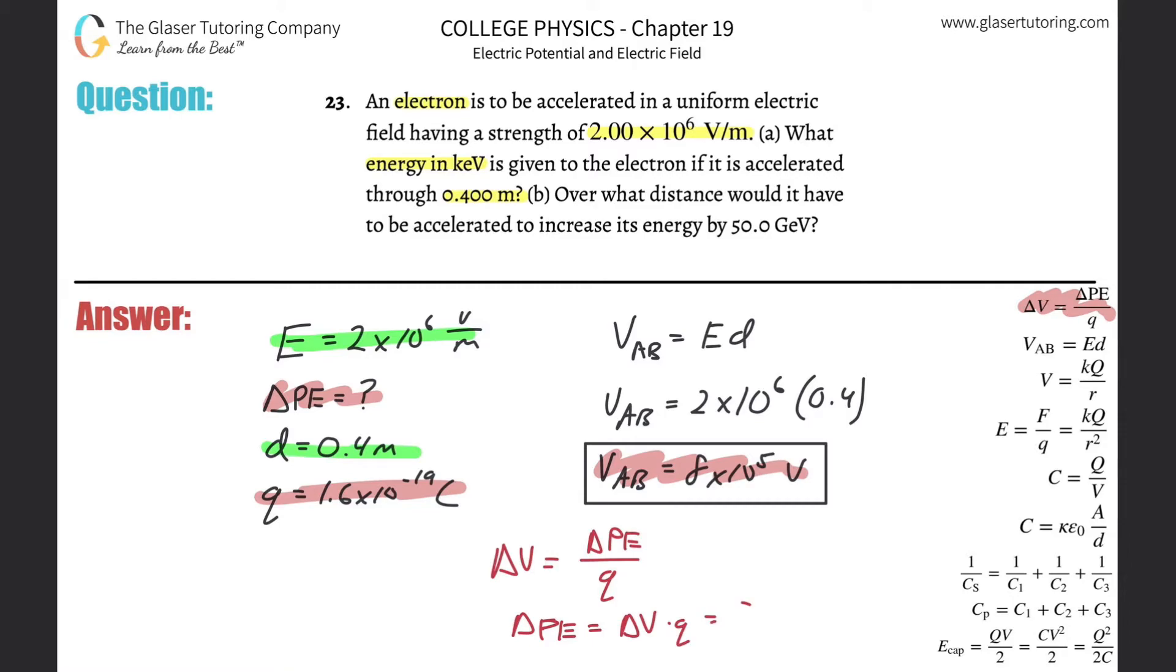So change in voltage multiplied by Q. What's the voltage? It's 8 times 10 to the fifth. What's the charge? It's 1.6 times 10 to the minus 19th. And there we go. So delta PE now is going to be equal to that value multiplied by 1.6 times 10 to the minus 19. It comes out to be about 1.28 times 10 to the minus 13th. And that is in terms of joules.